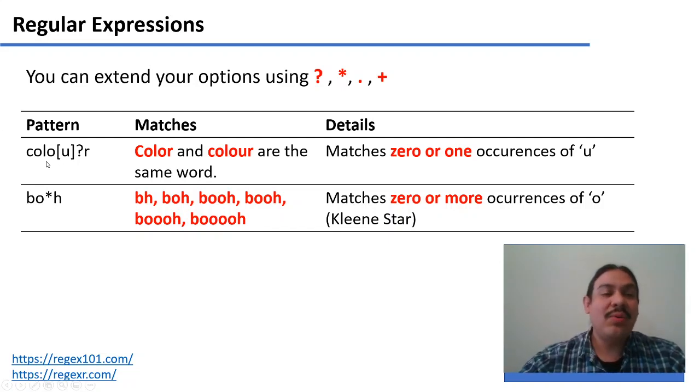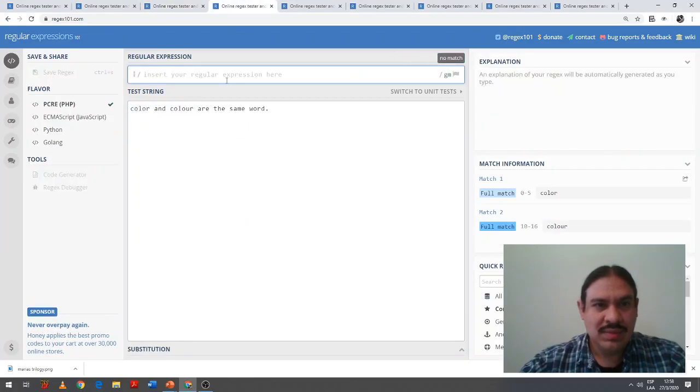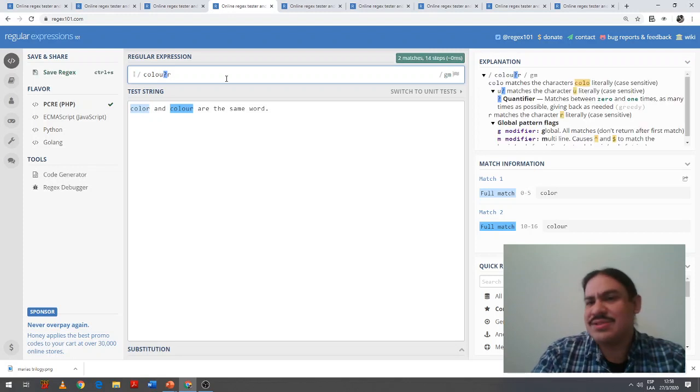So C-O-L-O finds the letters C-O-L-O, and then square bracket U question mark will tell you whether there's zero or one occurrences of the letter U. As you can see, the square brackets are not necessary for that one. Color and color are the same word, and this regular expression allows us to find it regardless of its spelling. The question mark allows you to find something either zero times or one time.